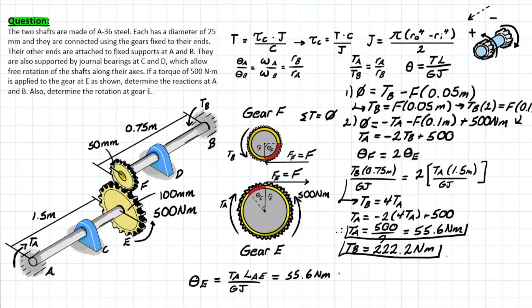So plugging in these values that we previously solved for, we have 55.6 N·m times the length, which is 1.5 meters. Shearing modulus for A36 steel is going to be 75 × 10^9, and that's going to be in N/m². Our radius of the shaft, which is different from the radius we were talking about in the gears, is 0.0125m in our case. So here in our formula we have r^4, so we just have to take 0.025, put it over 2, and then to the power of 4.